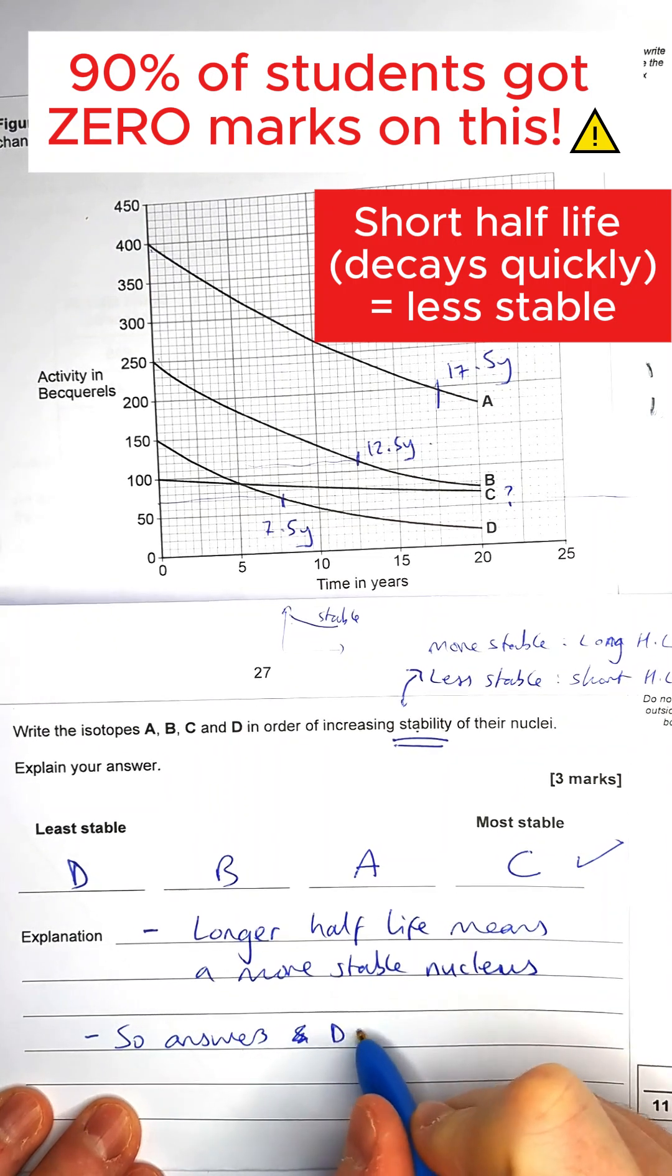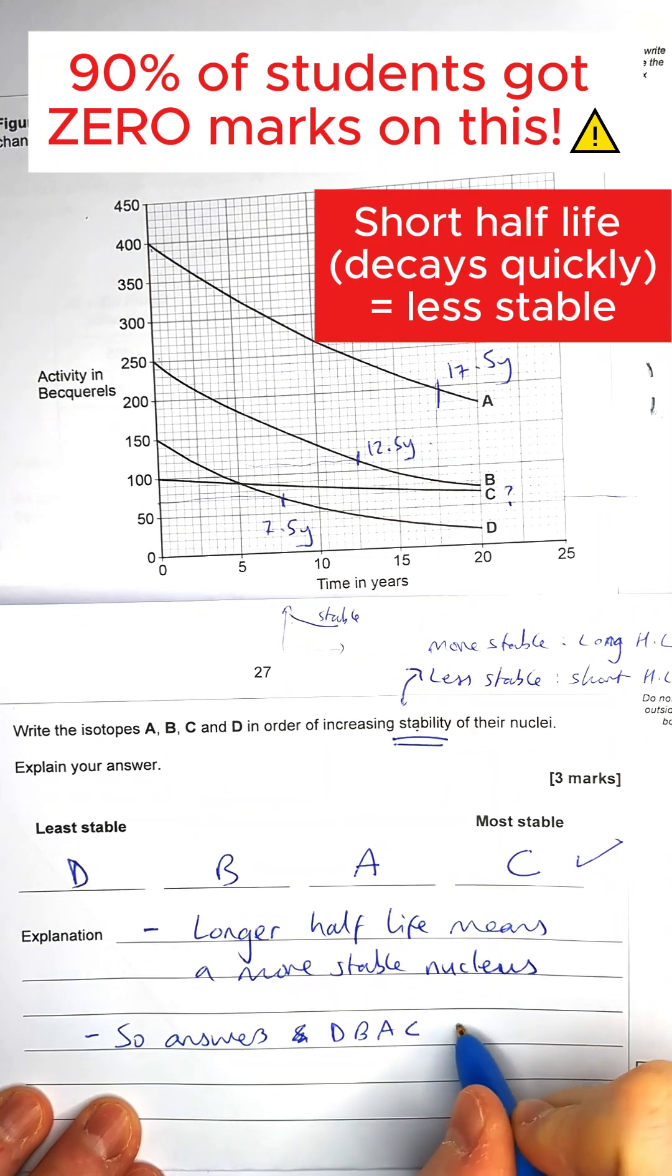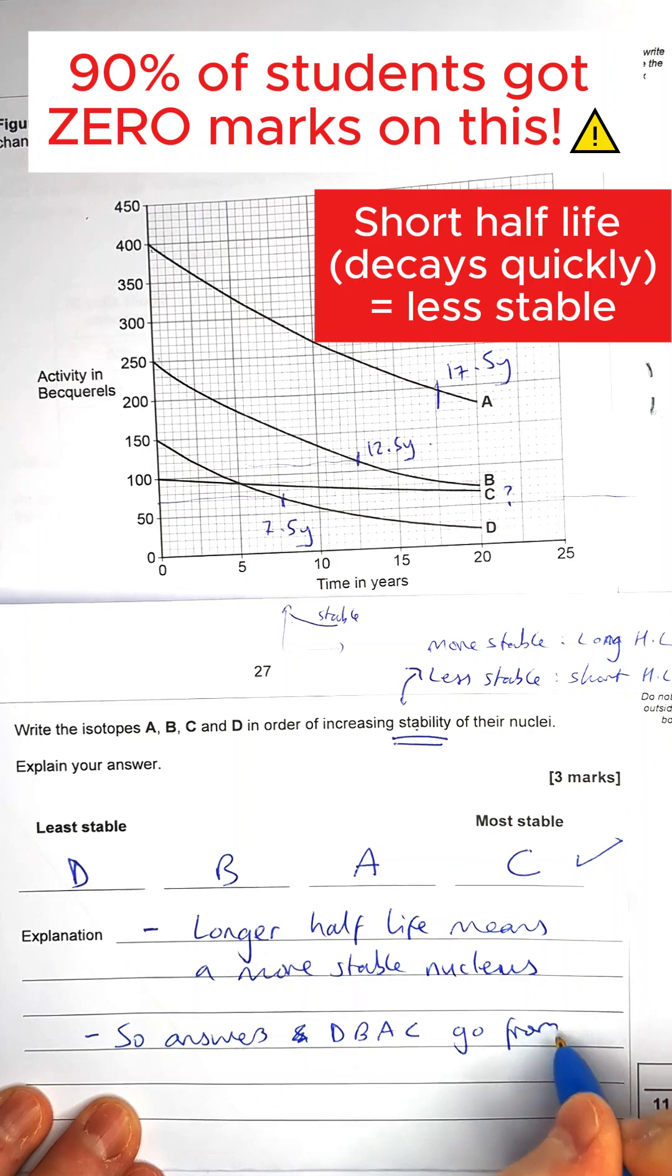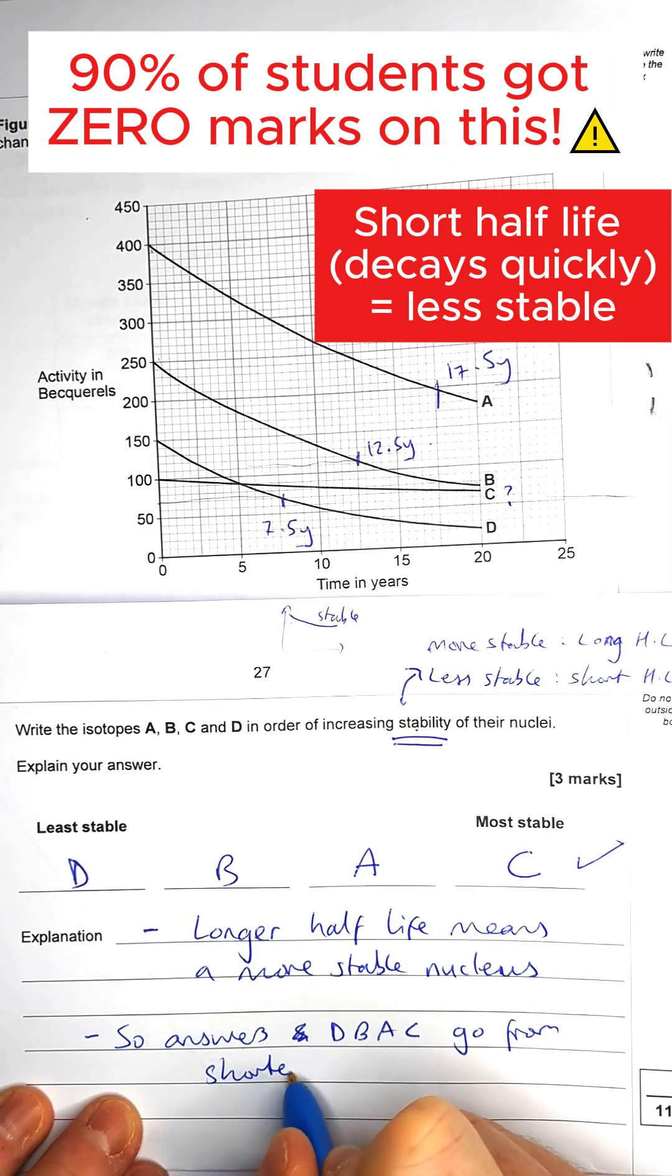So then you say your answers, so D, B, A, C, go from shortest to longest half-life.